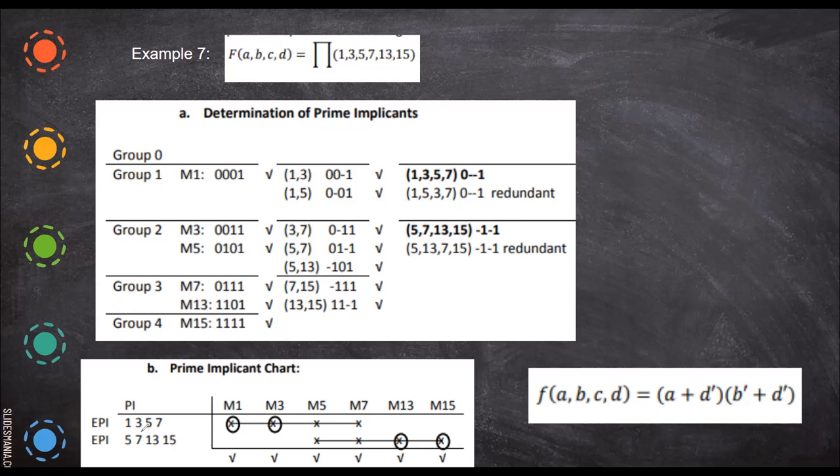So one, three, five, seven, and five, seven, 13, 15, and put a cross mark for the respective max term. You write the max term here, and then you take cross mark for these two terms. Now, you check for single cross mark. This is one, this is one, these two have two. So this is one answer.